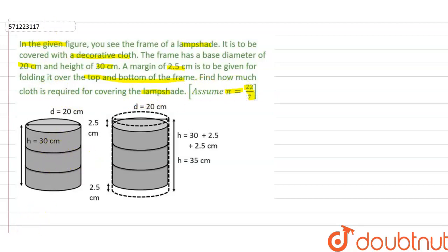So we have this frame of a lampshade. The base diameter of this frame is 20 cm and the height is 30 cm. In the question, a margin of 2.5 cm is given for folding over the top and bottom. So 2.5 cm on top and 2.5 cm on bottom margin is given.